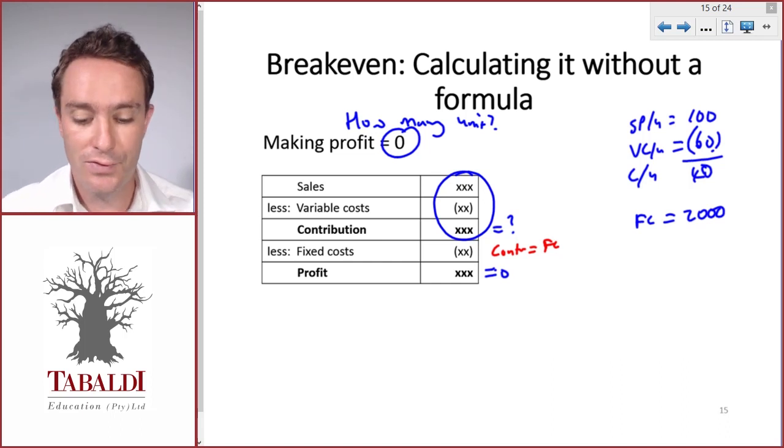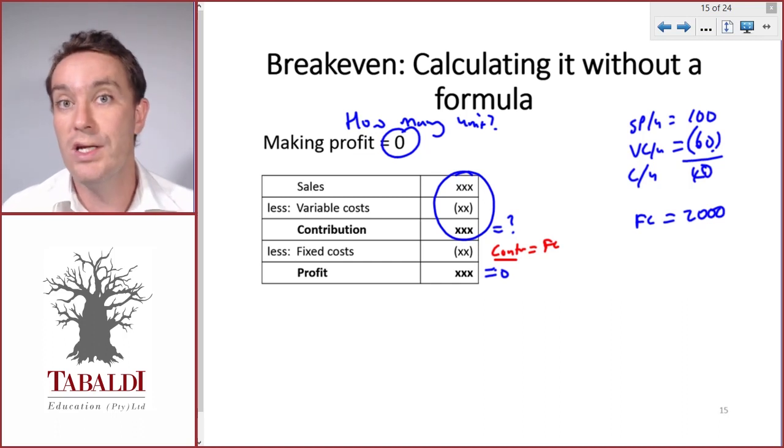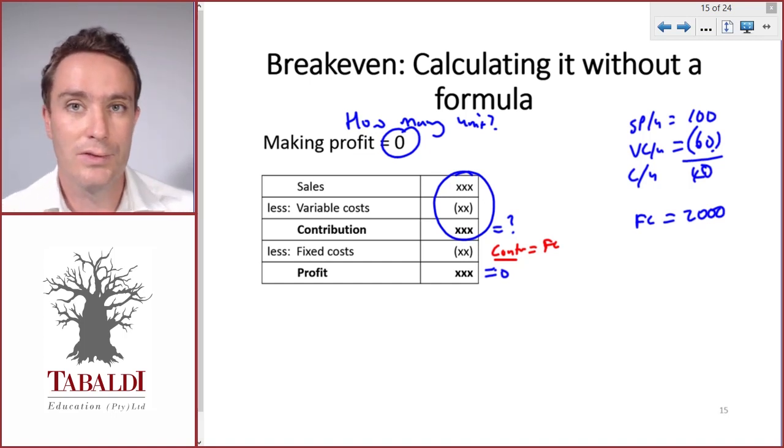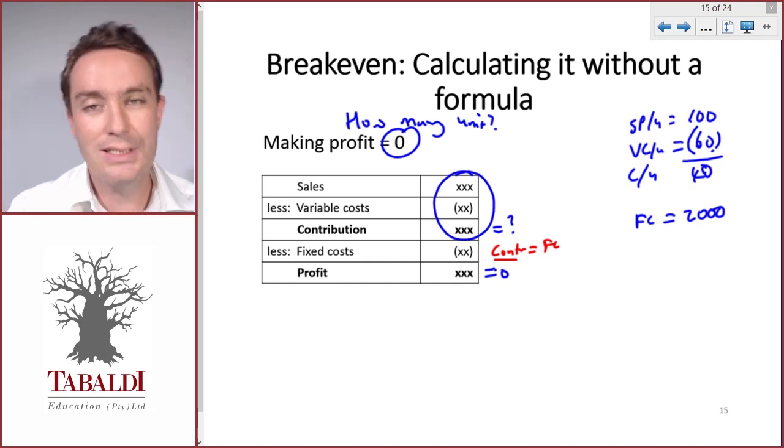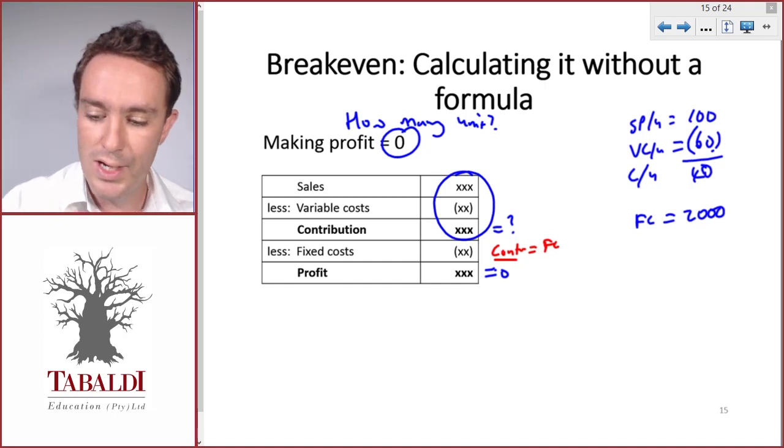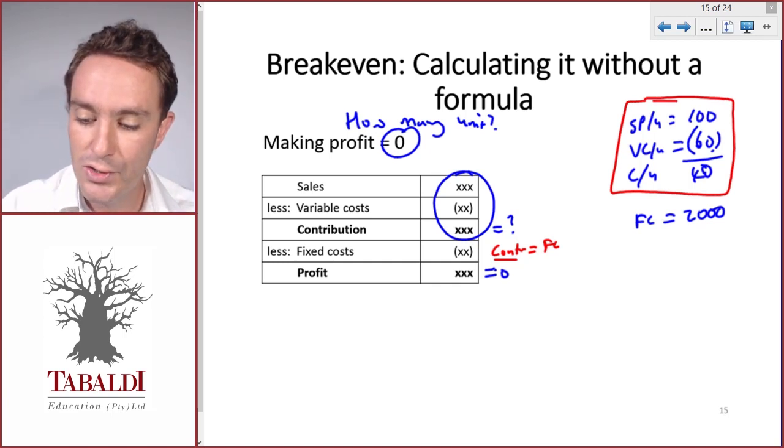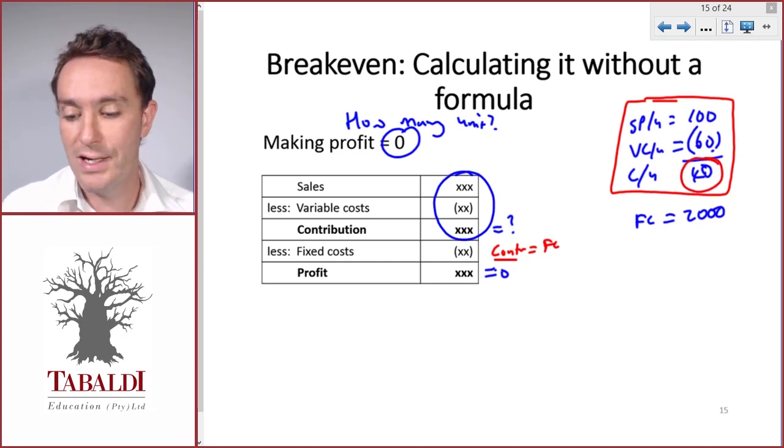Contribution is a positive, fixed costs a negative. If we have a contribution equal to our fixed costs, we know our profit will be zero. Now the question becomes how many units do we need to sell in order to make our contribution equal to our profit. How can we calculate this with the information that we have without thinking of a formula? How much does each unit contribute? Each unit when sold contributes 40 towards covering our fixed costs of 2,000.